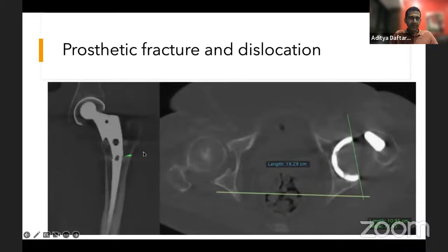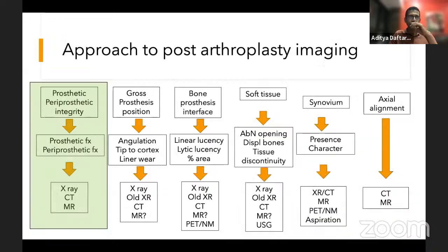Here's an example of a prosthetic fracture through the femoral implant itself, in a patient who had a dislocation because the acetabular cup was too far anteverted. To summarize the first part: prosthetic and periprosthetic integrity, fractures, and how we look at them — mainly CT and X-rays are helpful. X-rays with multiple obliquities are good, but CTs are often needed for more detail.